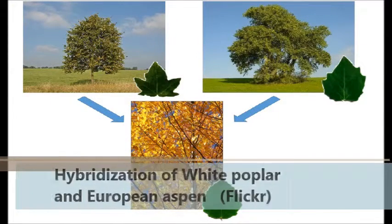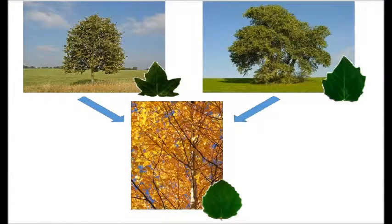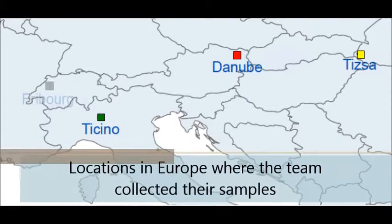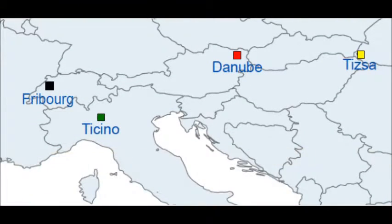Céline and her colleagues studied white poplar, European aspen, and their hybrid offspring. They collected leaf samples from locations in Italy, Austria, and Hungary.